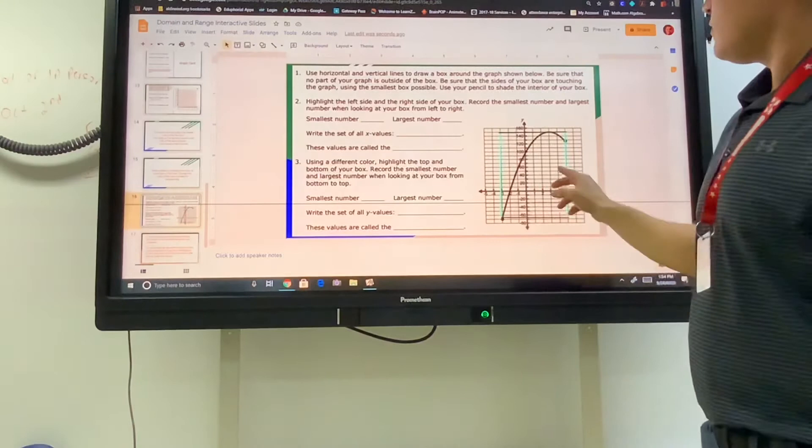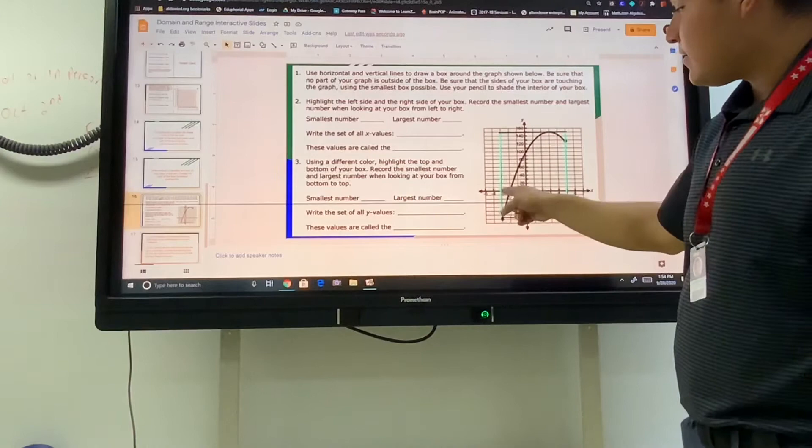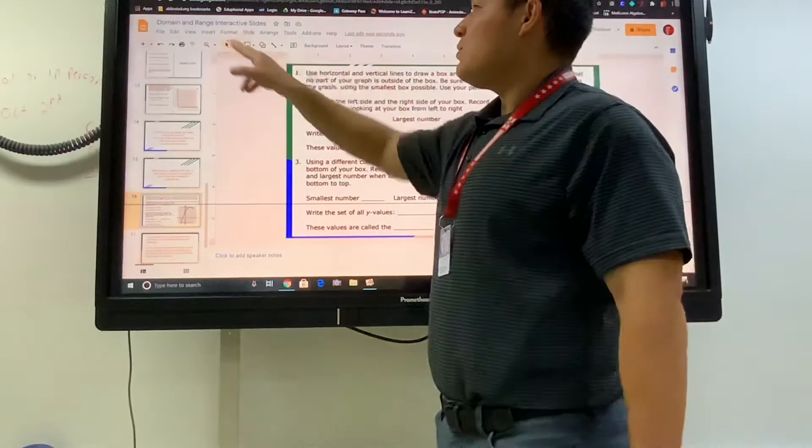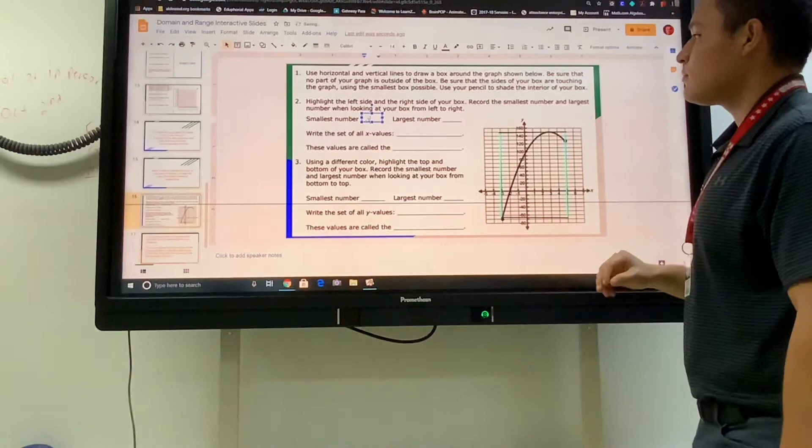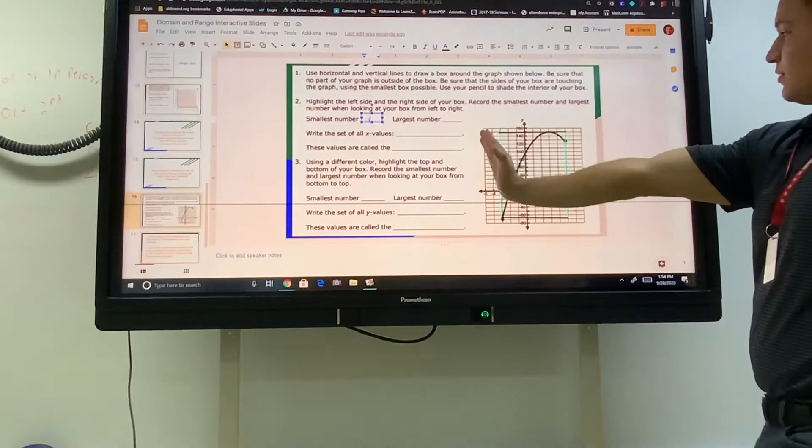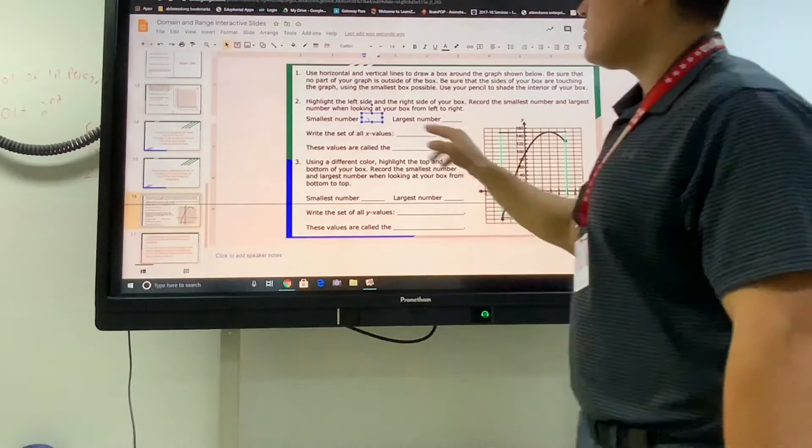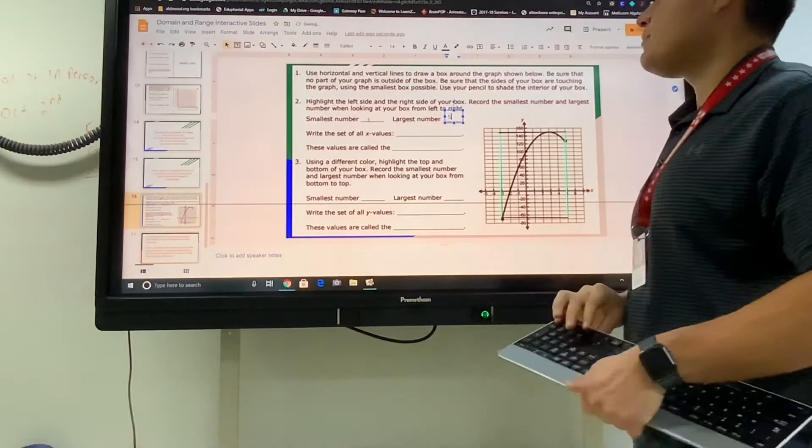So from left to right, that is the x-axis. The smallest number on the x-axis was, this line goes through negative 3. Smallest number was negative 3. The largest number, the largest number going from left to right, this other right most blue line goes through 5. So we're going to put a text box for the largest number being 5.